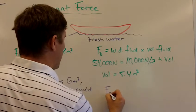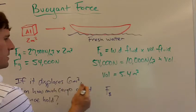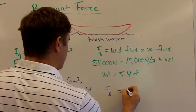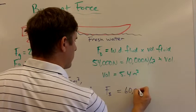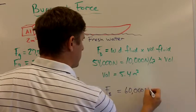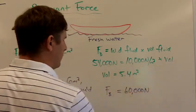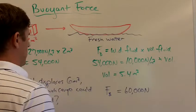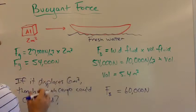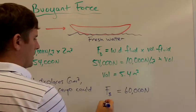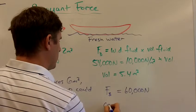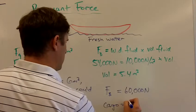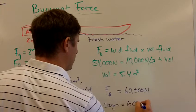So FB now, the buoyant force is going to equal six cubic meters times 10,000. So 10,000 times six is 60,000 newtons. Right? 10,000 times the new volume which is 60,000. So that's the new buoyant force and if we say 60,000 minus 54,000, well that means that the amount of cargo that can be held is 6,000 newtons.